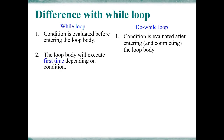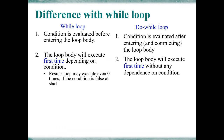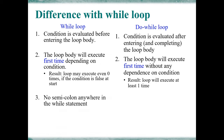The second difference is that the while loop body will execute the first time depending on the condition — when the condition is true, the statement executes. The while loop may execute zero times if the condition is false. In a do while loop, the loop body executes the first time without any dependence on the condition, so the do while loop will execute at least one time even if the condition is false.